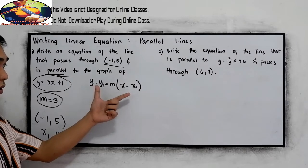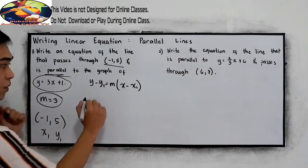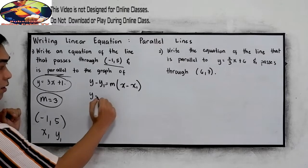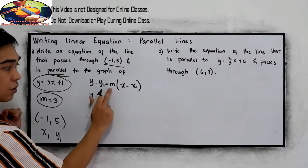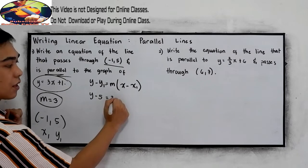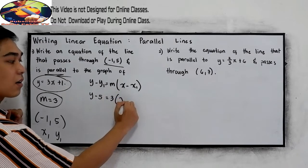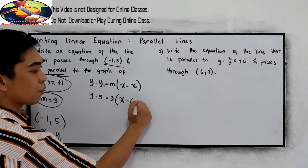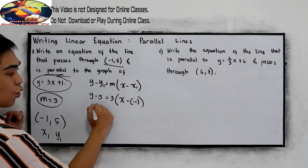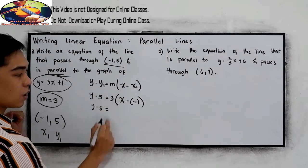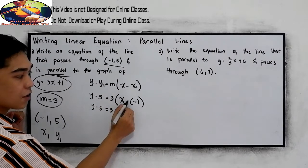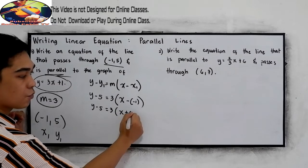We need to substitute into the point-slope form. So y minus our y sub one which is 5, is equal to our m which is 3, times x minus x sub one which is negative one, or positive one. y minus 5 is equal to 3 times x negative times negative positive one.